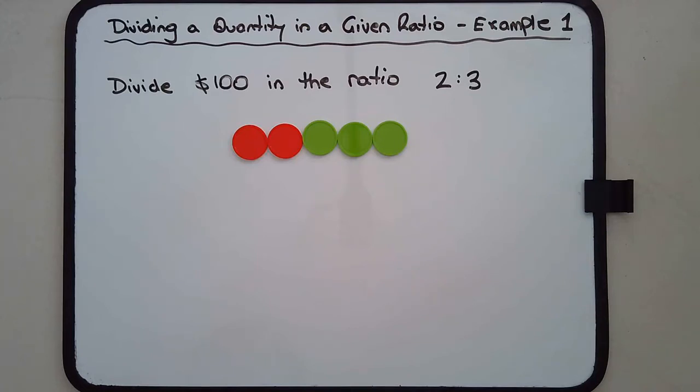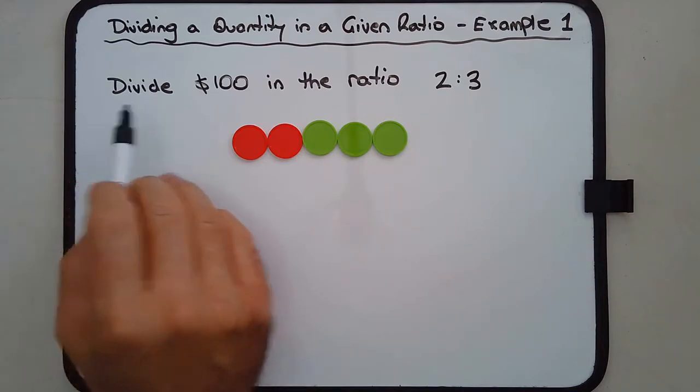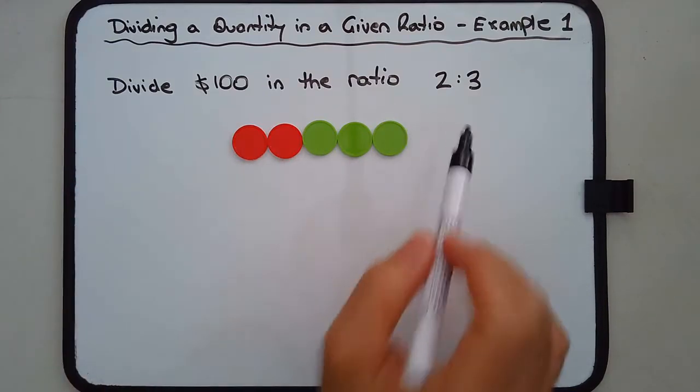Let's have a look at our first example now, dividing a quantity in a given ratio. Example one: divide $100 in the ratio 2 to 3.